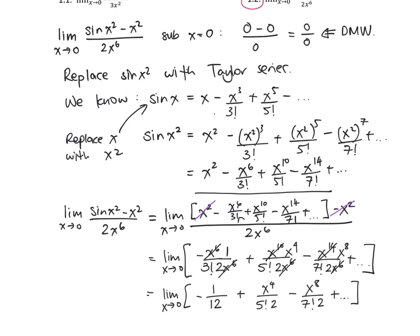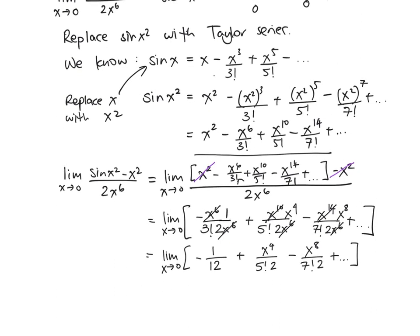Notice that when we take the limit, it doesn't affect our minus one twelfth. So the limit as x goes to zero of minus 1 over 12 is just minus 1 over 12. The limit as x goes to zero of x to the 4 is zero, and of x to the eighth is zero. Any higher-order terms also have x to some power, so those are all zero. We end up with our answer: the limit is minus 1 over 12.